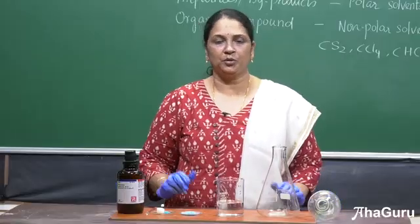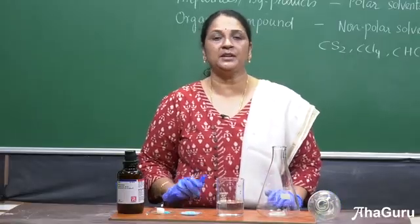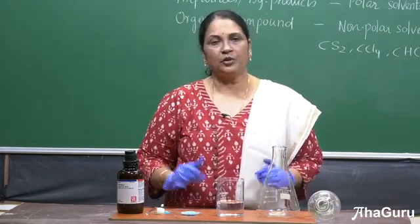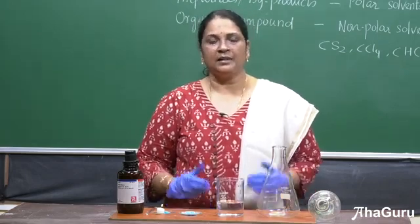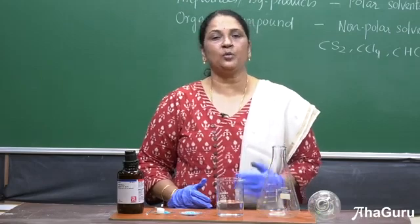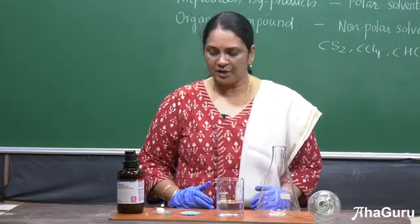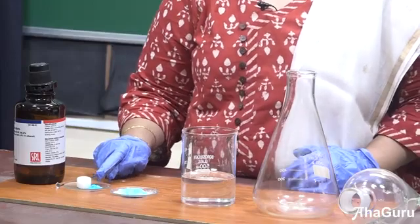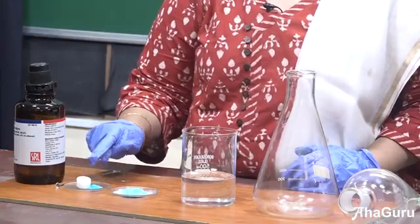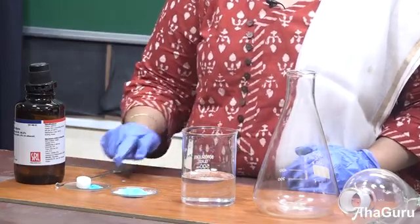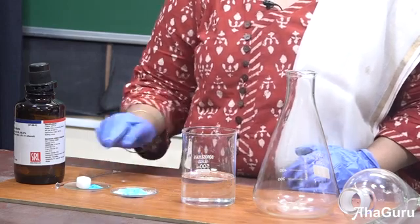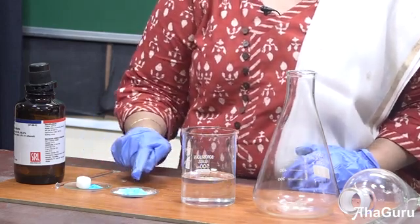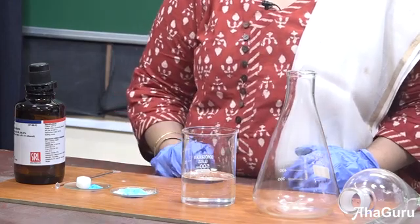I am going to show you a small experiment based on the differential extraction method using a separating funnel. We use this method to separate polar and non-polar compounds. For experimental purposes I have taken two compounds: one is naphthalene and the other is copper sulfate. We know that copper sulfate is polar and naphthalene is non-polar. I have made them into a powder and taken this mixture.